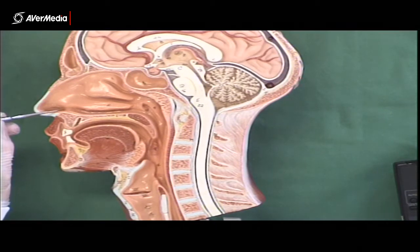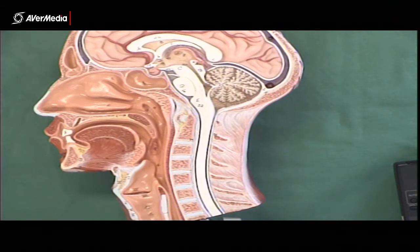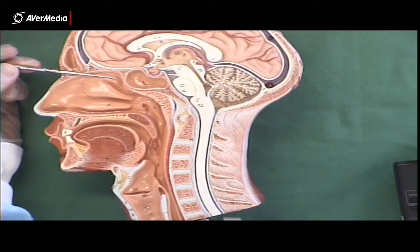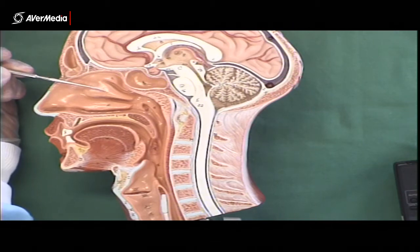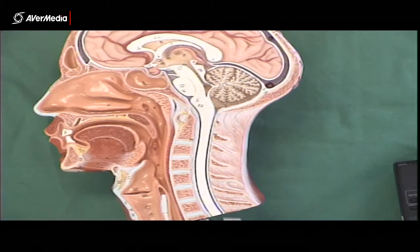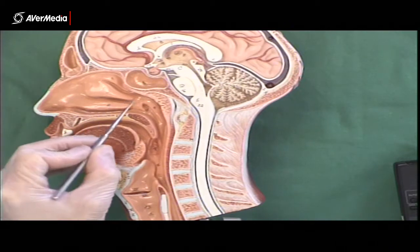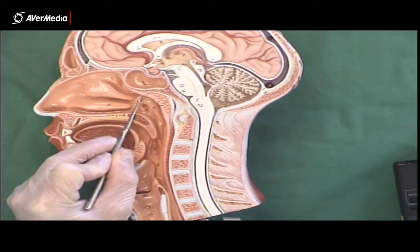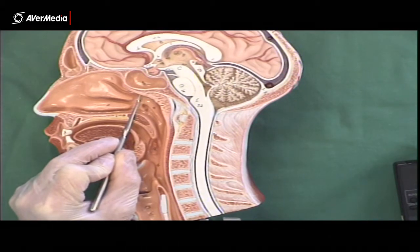Just this little part here is the nasal vestibule. Then within the nasal cavity, we can see the superior, middle, and inferior nasal conchae. If we put a line right here where the pointer is, that's where the nasal cavity ends.